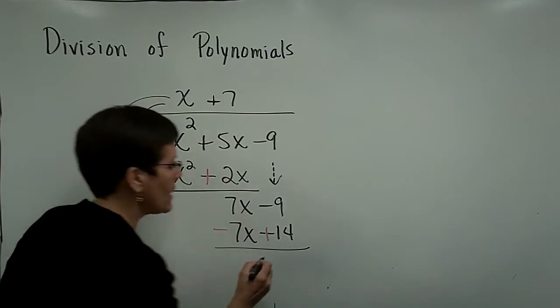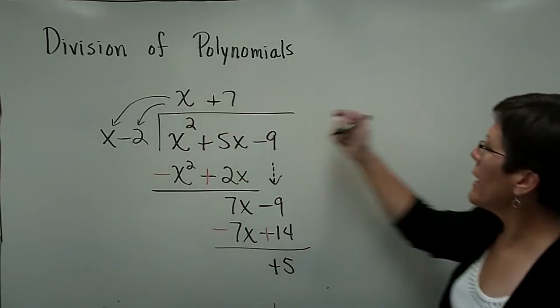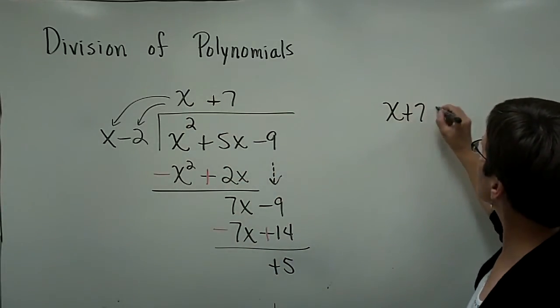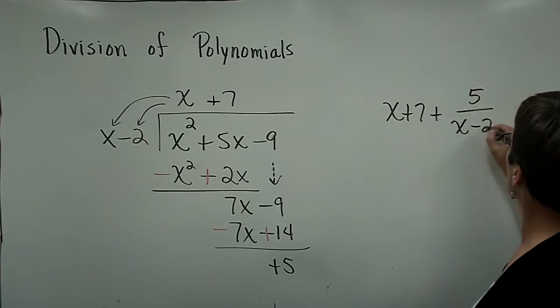A positive 14 and a negative 9 adds to be a positive 5. And my answer will be written as x plus 7 with a remainder of 5 over the divisor of x minus 2.